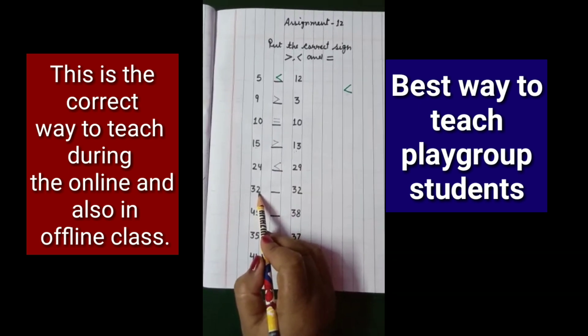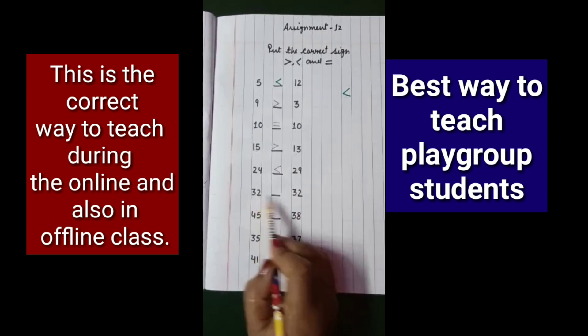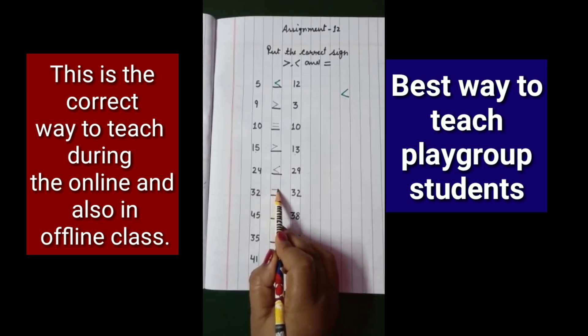The next one is 32 and 32, which is the same number. So the sign will be equals to.